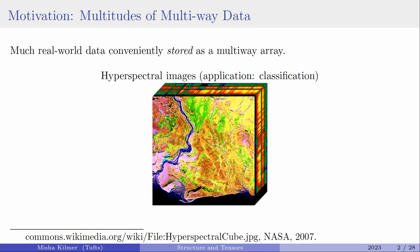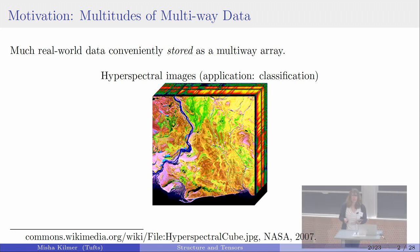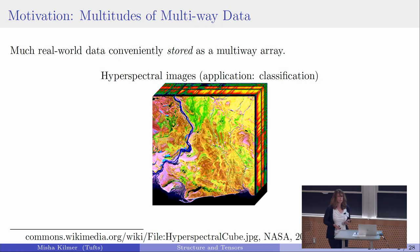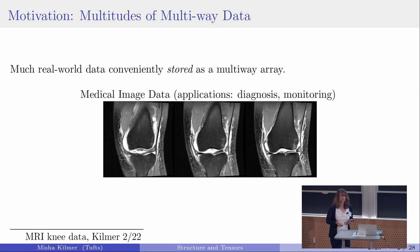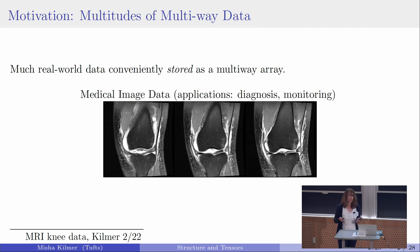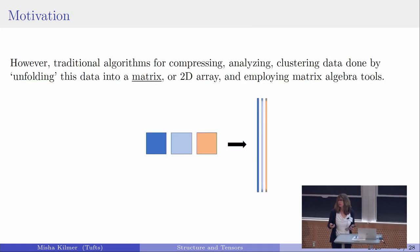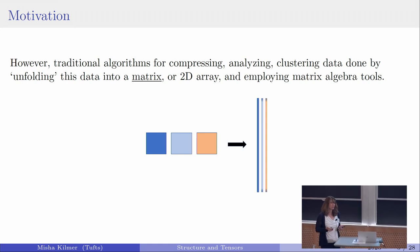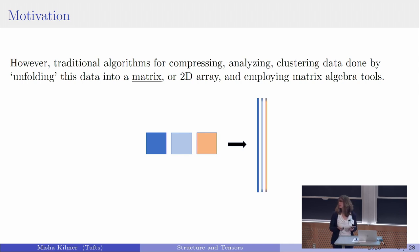I want to start by making the case for the work I'm going to show you today. Much of the real-world data we collect tends to be stored conveniently in multi-dimensional arrays. Here's one example: hyperspectral images where wavelength is into the board. These are my own MRI — my knee last year when I blew out my ACL. Medical image data is a third-order or fourth-order array depending on whether you have time and color and things like that.